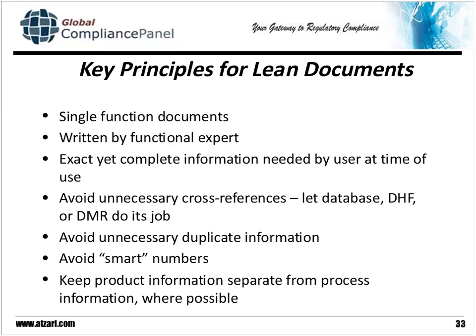We want to avoid unnecessary duplicate information. Smart numbers — we're going to talk about those a little bit later. We see them everywhere and everybody assumes that they're necessary, but they're actually a potential source of error and they create a lot more problems. And in general, just like that car's owner's manual and the map of New Hampshire, we want to keep the product information separate from the process information.